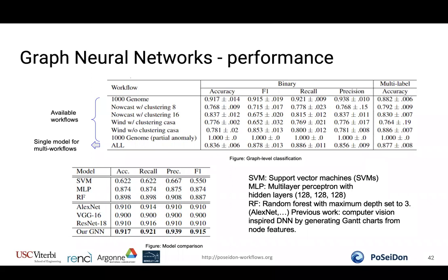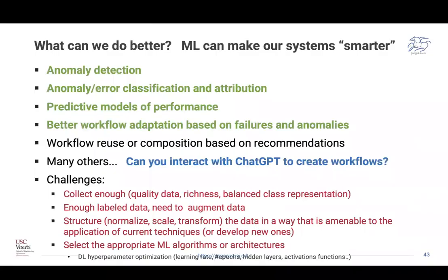We compared our GNN method to other methods from the literature, and also to earlier work where we took execution traces as a Gantt chart image and used image processing algorithms to detect anomalous execution. Out of these, the graph neural networks performed best on 1000 Genomes. More work is needed: you can identify an anomaly at a node, but what type of anomaly is it, how to fix it, and how the workflow should respond — that's another challenge.